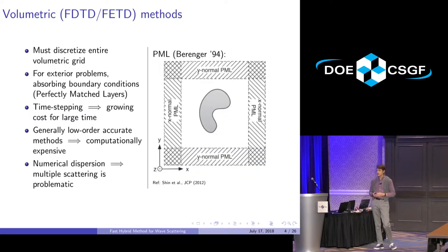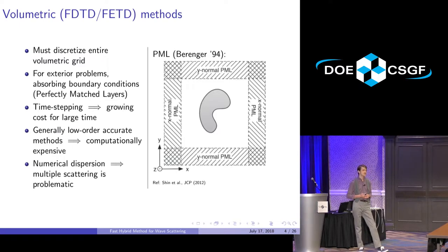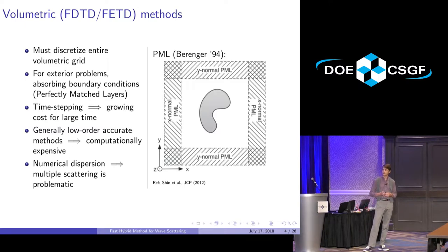Volumetric methods have a number of problems. You have to discretize everything for an exterior geometry, which is obviously impossible. So for the exterior problem, you have to use absorbing boundary conditions, which is challenging and expensive. Time-stepping is an issue because you have to iteratively progress through time. You generally have low-order accurate spatial and temporal discretization, so it's very expensive. Numerical dispersion is always present in finite difference methods, and multiple scattering is problematic when waves re-intersect the boundaries. I don't consider these to be useful for me.